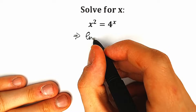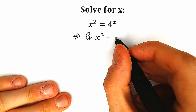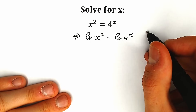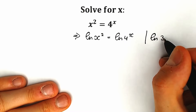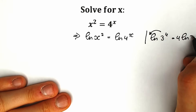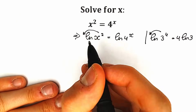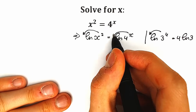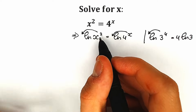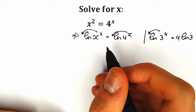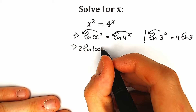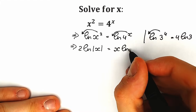So we have natural log of x² equal to natural log of 4 to the power x. Using the log power rule — for example, ln(3⁴) = 4·ln(3) — we can bring the exponents in front. We can write 2·ln|x| = x·ln4. Don't forget the absolute value since x can be positive or negative.